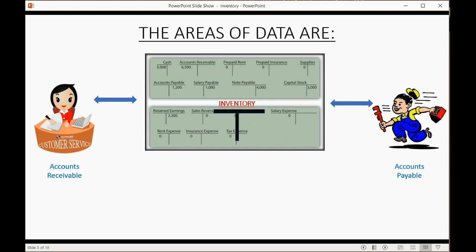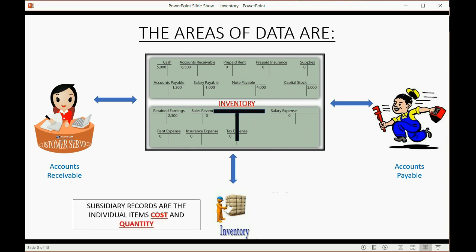Inventory is another peripheral area of data that has its own subsidiary set of records, where the total of those records has to match the balance in the general ledger for the T account inventory.